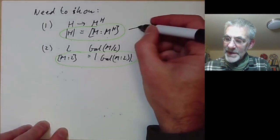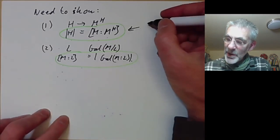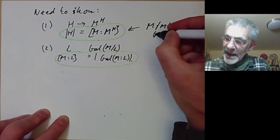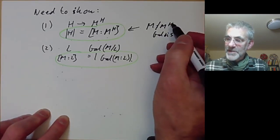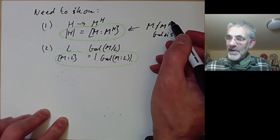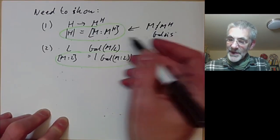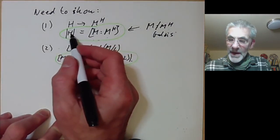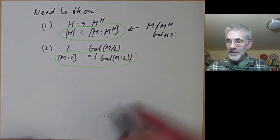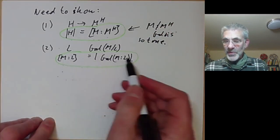This first one is easy to prove because we know M over M^H is Galois, since we showed earlier that if you take the fixed points of a field M under a group H, then that's a Galois extension. And since it's Galois, this implies that H must actually equal the order. So this is automatically true. The problem is to prove the second equality.